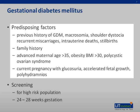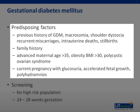Predisposing factors include previous history of gestational diabetes, macrosomia, shoulder dystocia, recurrent miscarriages, intrauterine deaths, stillbirths, and family history of diabetes in a first degree relative.